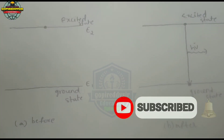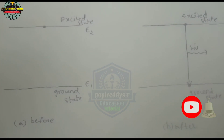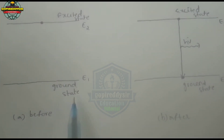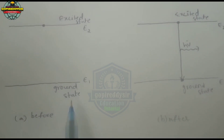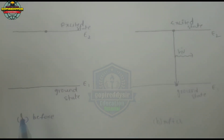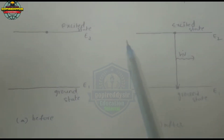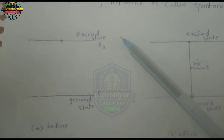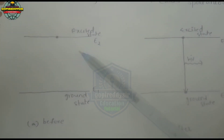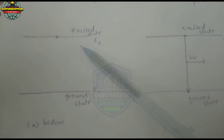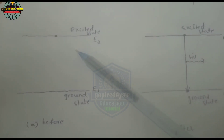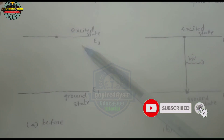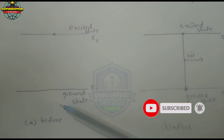Here is the figure. E1 and E2 represent the energy levels of the system. If an atom is in the excited state E2, we will consider the atom in the excited state. In that case, the atom will transition on its own to the ground state E1.